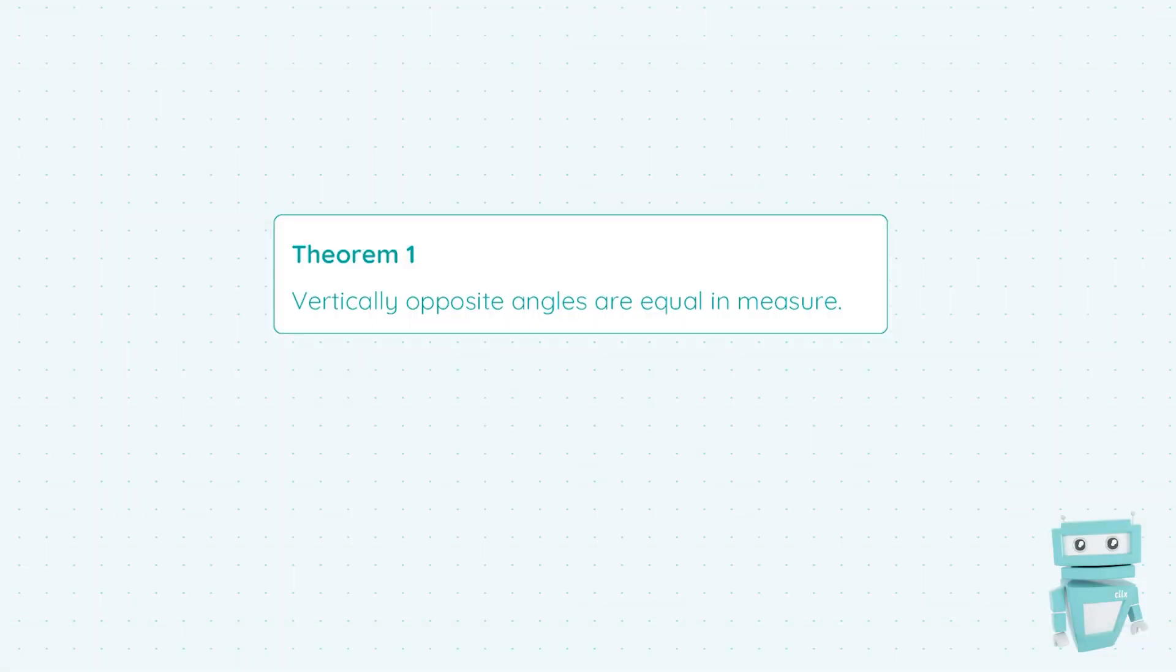Hi guys, my name is Sean and I got a H1 in Leaving Cert Maths. In this video we're going to be looking at Theorem 1, which states that vertically opposite angles are equal in measure.